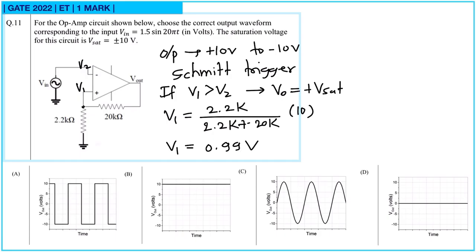And since 0.99 is less than this 1.5 volt which is the input, then it will flip its state. That means it will go to minus Vsat. So if V1 is less than V2, in that case output will be equal to minus Vsat. And in that case V1 will be fed back to non-inverting terminal. So it will be 2.2 k upon 2.2 k plus 22 k into minus 10 volt, and that will be equal to minus 0.99 volt.